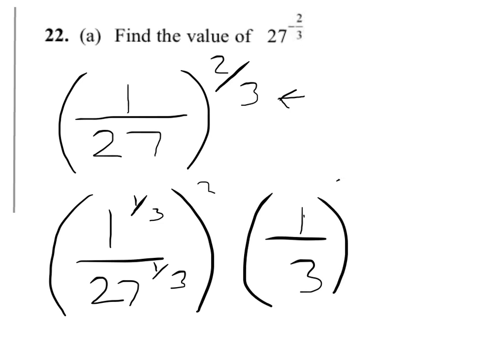We're nearly finished. We've now got to square 1 and square 3, and that's going to give us 1 over 9. So that's the first part of the question done.